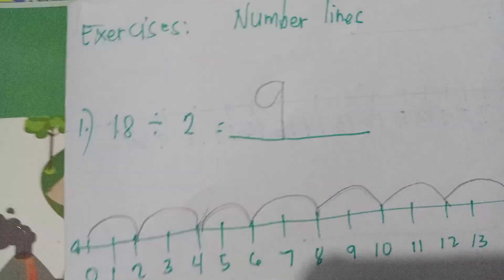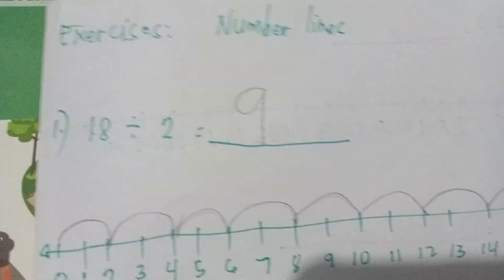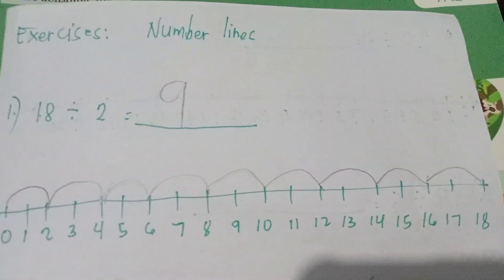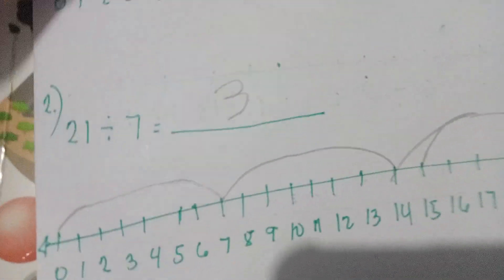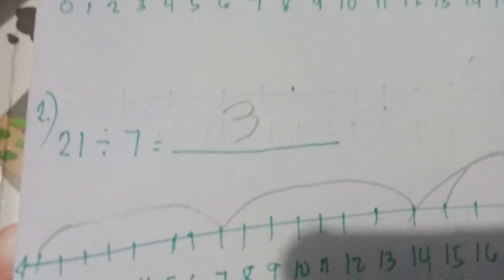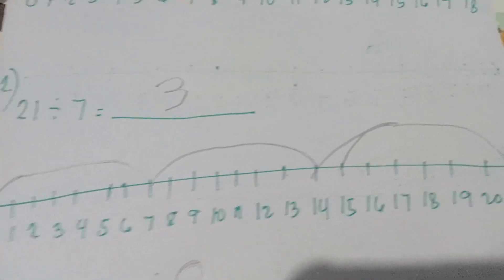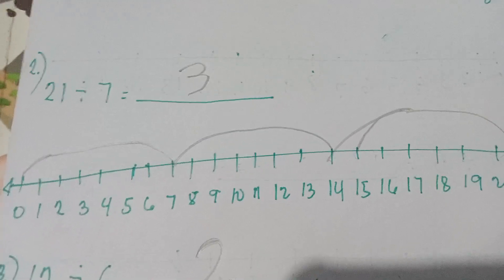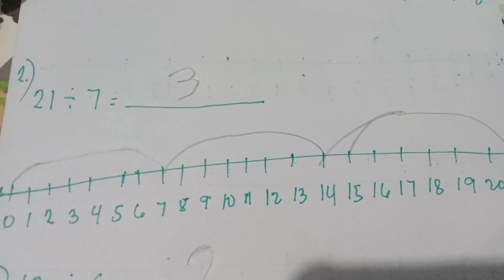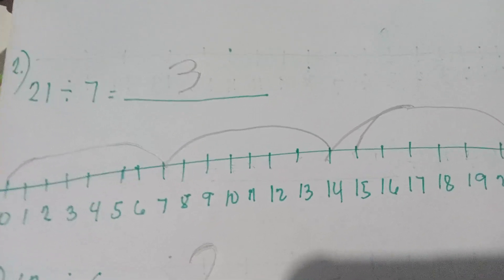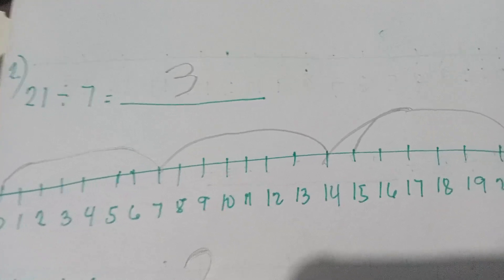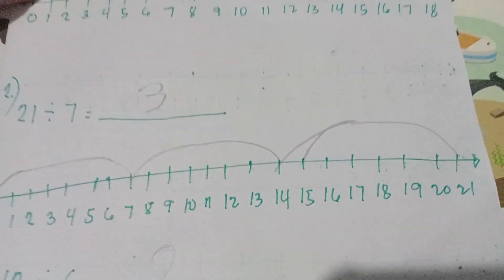Now I'm going to have another exercise, which has exercise number 1: 18 divided by 2. He answered 9. Then number 2: 21 divided by 7. He answered 3, which is correct, because he showed me counting number lines from 0 until 21, and he divided by 7.